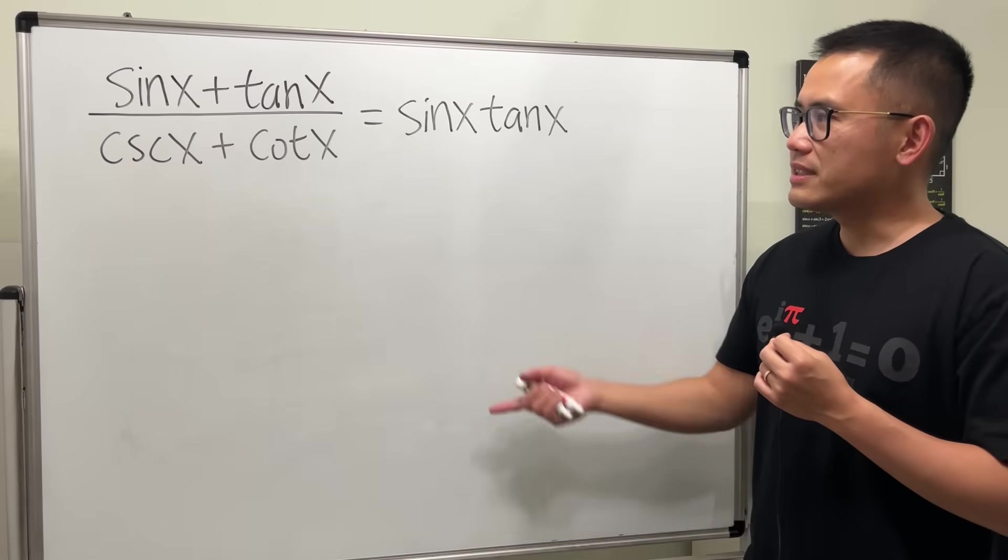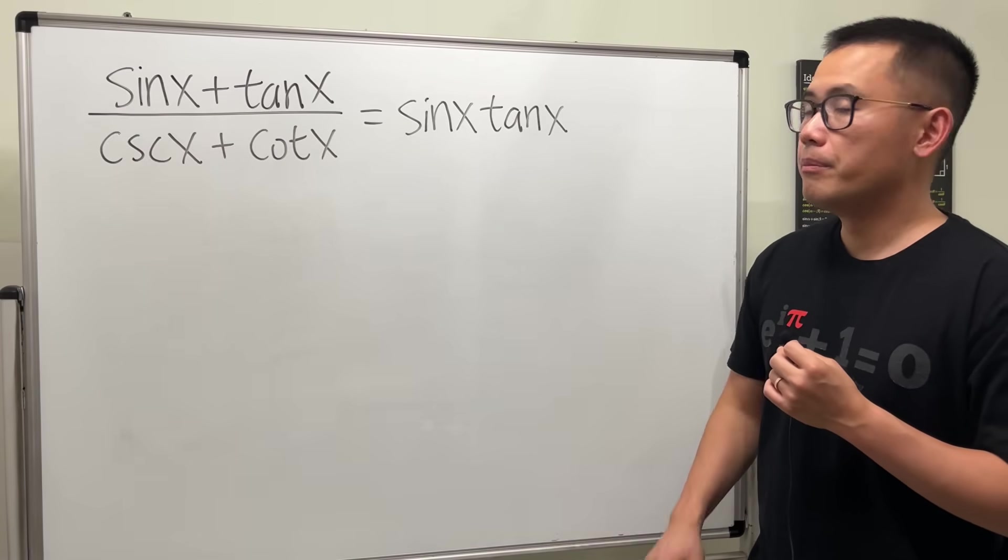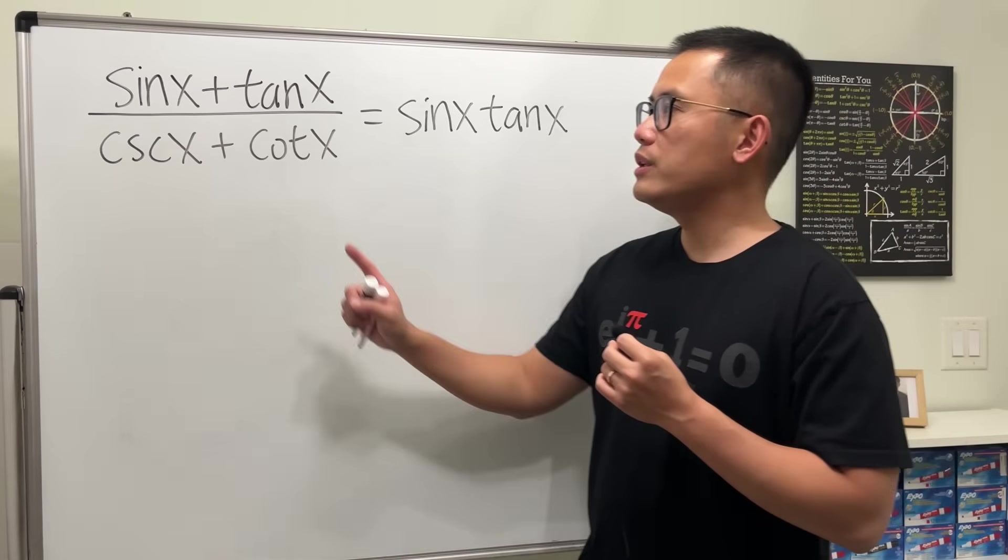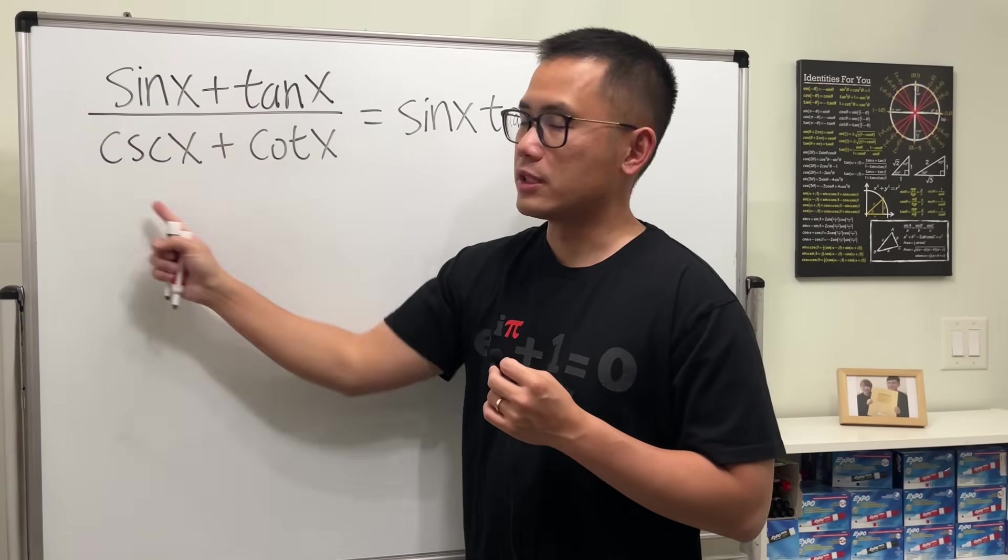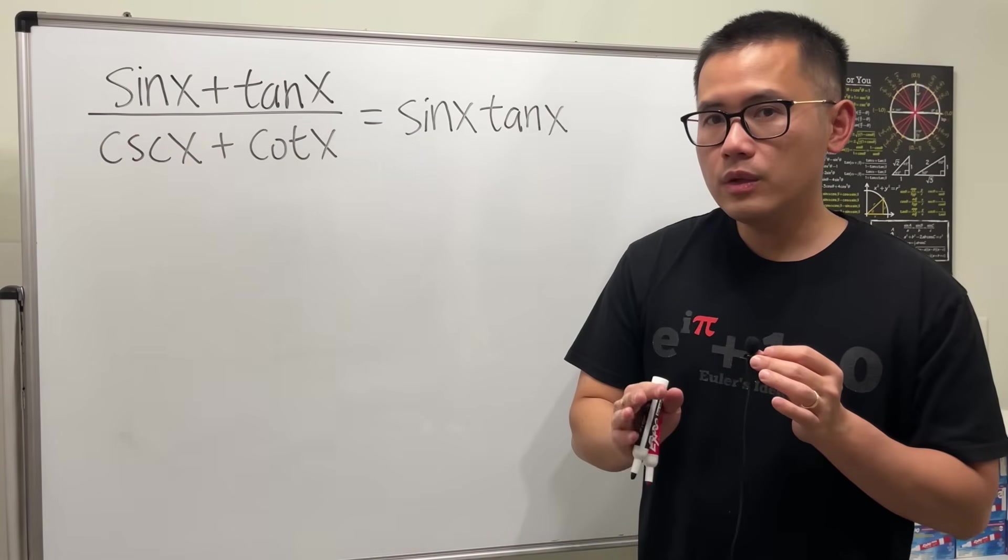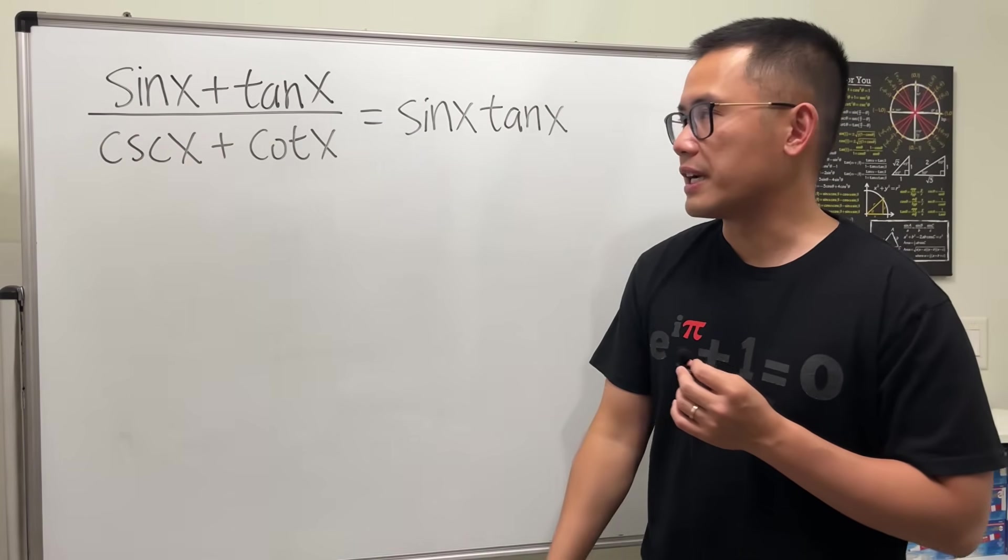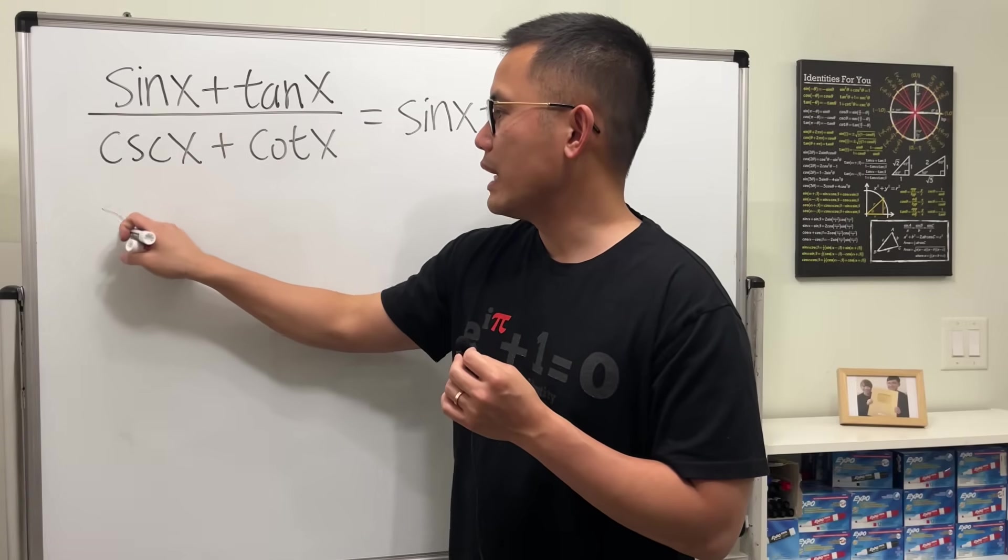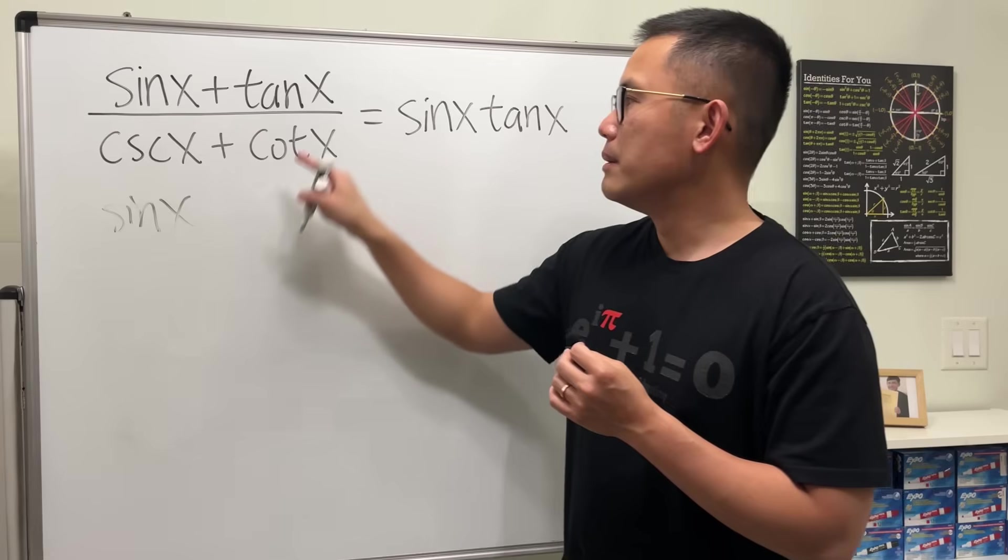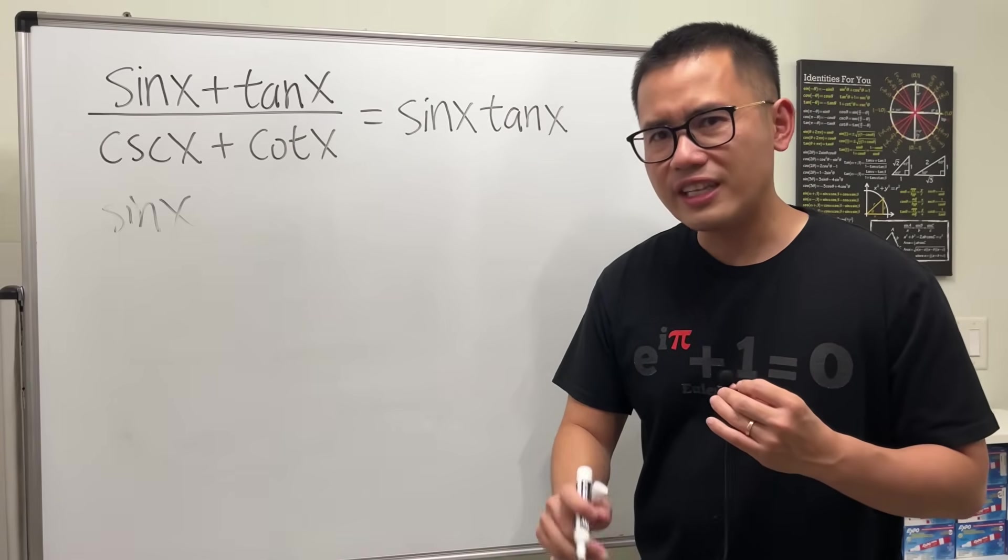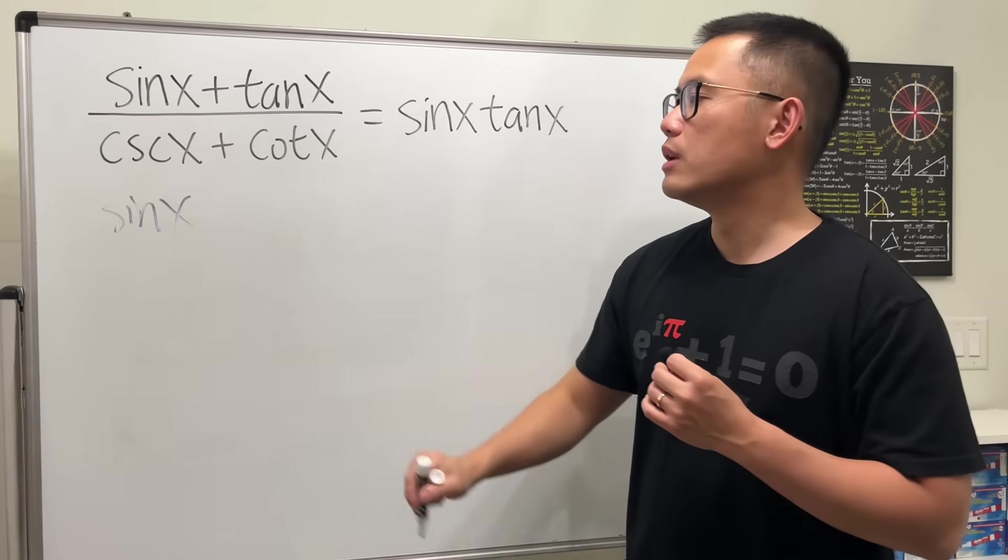Let's get to work. Pick one side—usually the more complicated side—so we'll start with this. We want to work with just sine and cosine. For the first term, we have sine x, keep that. But for tangent x, change that to sine x over cosine x.